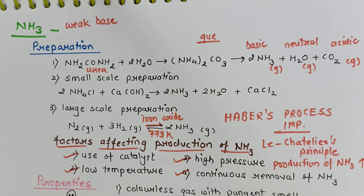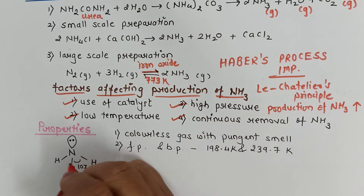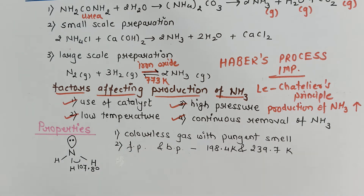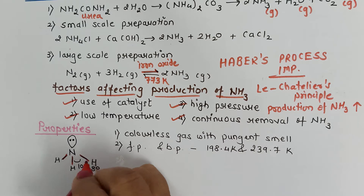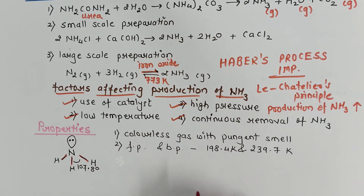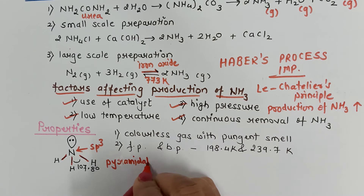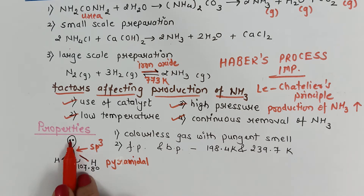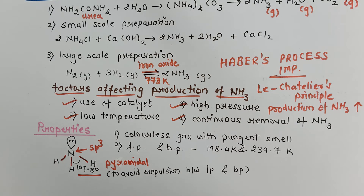Regarding its properties: when ammonia is formed, out of the five electrons in the valence shell of nitrogen, three are used in bond pairs with hydrogen and one lone pair remains. Nitrogen is sp3 hybridized and the shape of ammonia is pyramidal. To avoid repulsion between the lone pair and bond pairs, the bond angle is 107.8°, which is less than the expected tetrahedral angle.